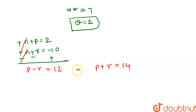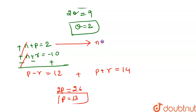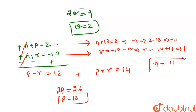We have p-r = 12 and p+r = 14. Adding these gives 2p = 26, so p = 13. Then n+p = 2 gives n = 2-13 = -11. And from n+r = -10, r = -10-n = -10+11 = 1. So n = -11, p = 13, r = 1.